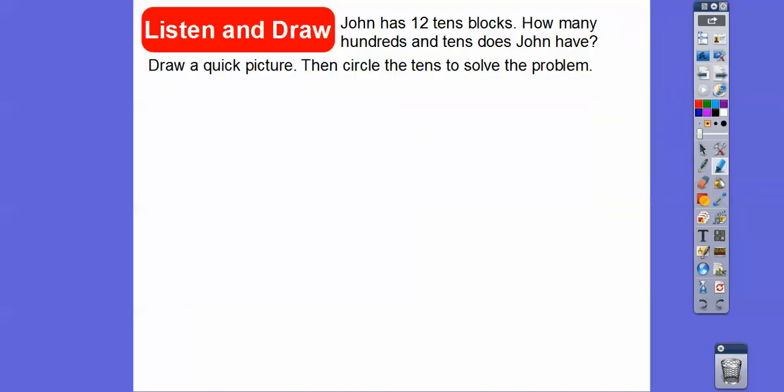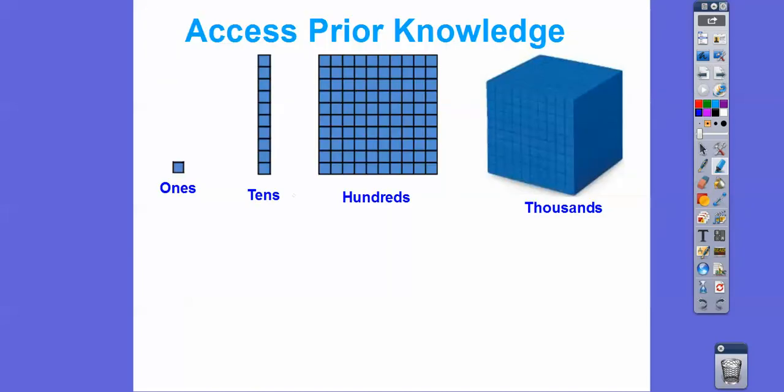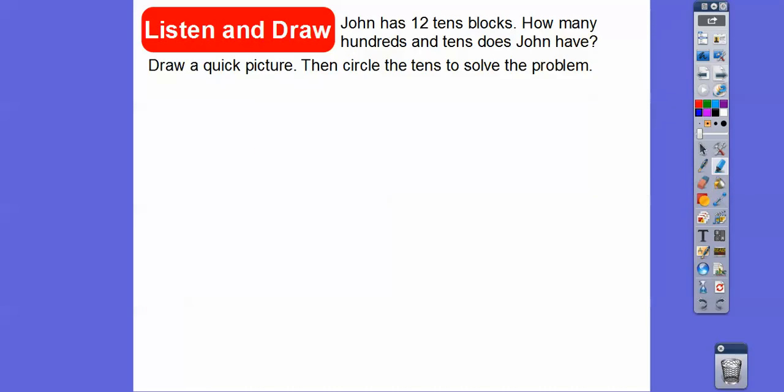So John has ten tens blocks — so that would be these ones right here. So how many hundreds and tens does John have? Draw a quick picture and then circle the tens to solve the problem.